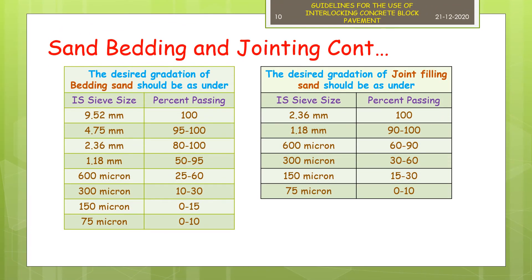Two types of sands are used in the construction of block pavements: one is for sand bed and the other is for block jointing. The grading and quality of sand are very important for the block pavement to perform satisfactorily. The sand used should be free from plastic clay and should be angular type. The bed of sand should not be so thick that it is difficult to control the surface level. Joints between blocks are filled with fine sand. Normally the bottom 20 to 30 mm of the joints gets filled with bedding sand, whereas the remaining space has to be filled with jointing sand by brooming it from the top. The joints are normally 2 to 4 mm wide.